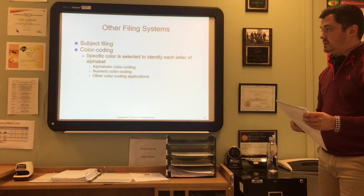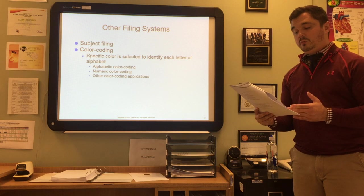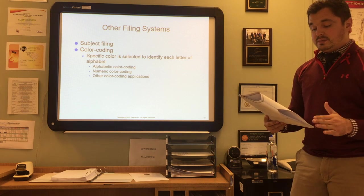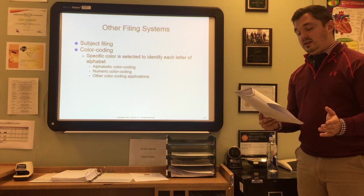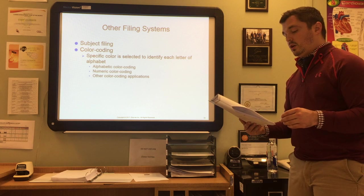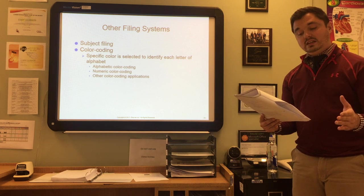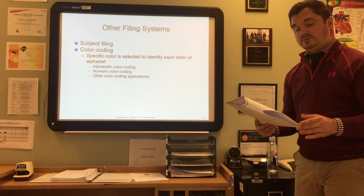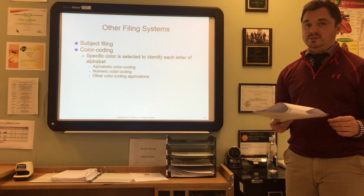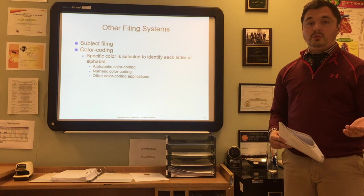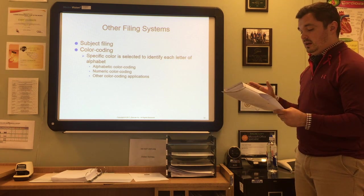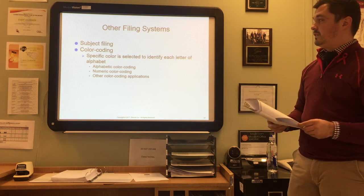Subject filing can be either alphabetic or alphanumeric and is used for general correspondence such as letters. The main difficulty with subject filing is indexing — deciding how to classify a document — and many papers require cross-referencing. When a color coding system is used, both filing and finding files is easier and misfiling is kept to a minimum, because color visually restricts the area of search. Color coding is used in both numeric and alphabetic filing.